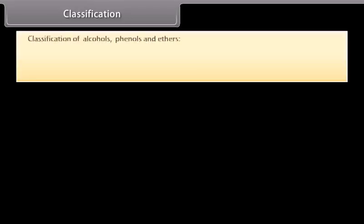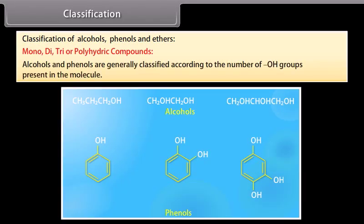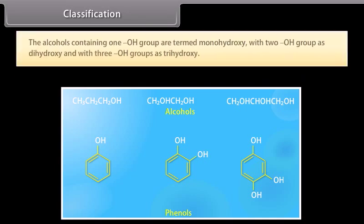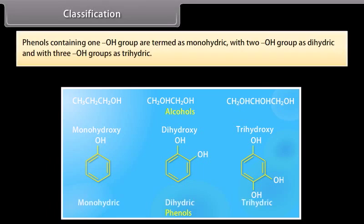Classification of alcohols, phenols and ethers. Alcohols and phenols are generally classified according to the number of hydroxyl groups present in the molecule. Alcohols containing one hydroxyl group are termed monohydroxy, with two hydroxyl groups as dihydroxy, and with three hydroxyl groups as trihydroxy. Phenols containing one hydroxyl group are termed monohydric, with two hydroxyl groups as dihydric, and with three hydroxyl groups as trihydric.